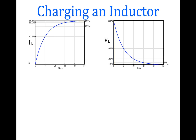The current increases through the inductor with respect to time. So on the y-axis, the current is given as a percentage of the eventual maximum current. The voltage across the inductor is decreasing with respect to time, so on the y-axis we have the voltage as a percentage of the initial maximum voltage.